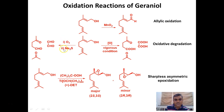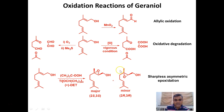Depending on the workup in ozonolysis, if reductive workup with dimethyl sulfide is used, then glyoxal is formed; with KMnO4 oxidation, oxalic acid is one of the products. Because of the isopropylidene group, acetone is obtained in both cases, and levulinic acid (or levulinate) is also formed. Another reaction is the Sharpless asymmetric epoxidation of the allylic alcohol geraniol, where two enantiomers are obtained and one is favored over the other due to the presence of (+)-diethyl tartrate.